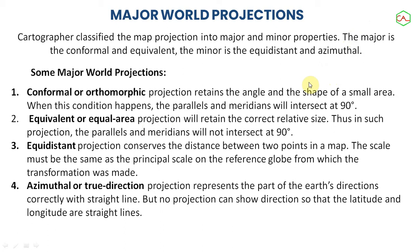Cartographers try to reduce the extent of distortion because of projection. The major world projections we have include: the conformal or automorphic projection, which actually retains the angles and shape of a smaller area; the equivalent or equal area projection, which tries to retain the correct relative sizes; the equidistant projection, which conserves the distance between two points on a map; and the azimuthal or true direction projection, which represents the direction correctly with a straight line.